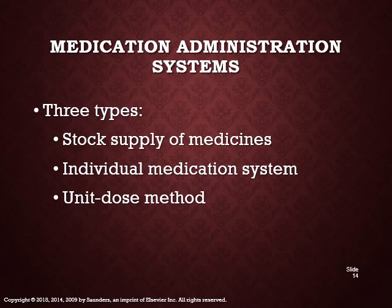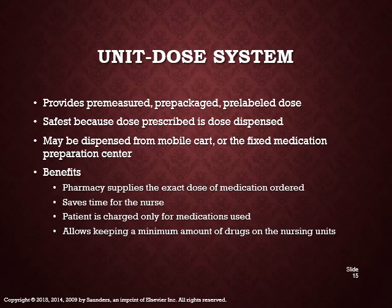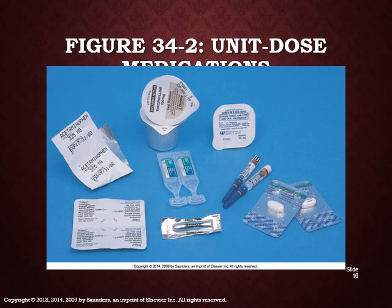There are three types of medication administration systems: stock supply, individual medication systems, and a unit dose method. The unit dose system provides pre-measured, pre-packaged, pre-labeled doses. It is the safest because the dose prescribed is the dose dispensed. It may be dispensed from a mobile cart or a fixed medication preparation center. The pharmacy supplies the exact dose ordered, saving time for the nurse. The patient is charged only for medications used, and it keeps a minimum amount of drugs on the nursing unit.